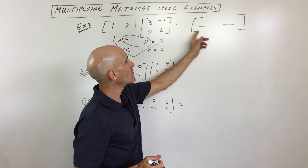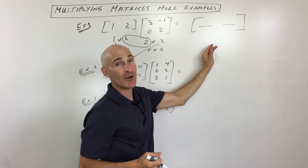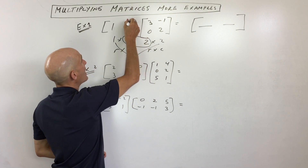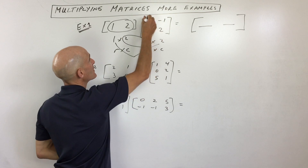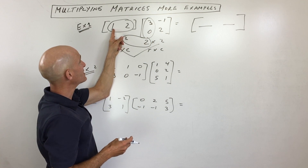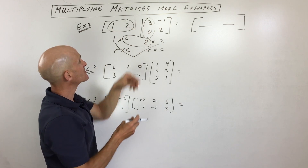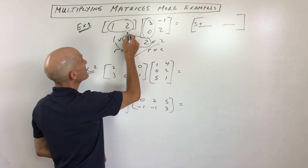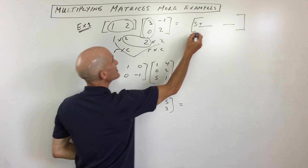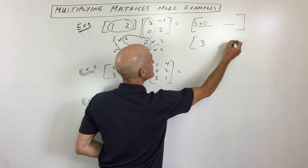So what we have here is the element that's in the first row, first column. So what we do is we take the first row times the first column. We take the first element in this row times the first element in this column — one times three is three — plus the second element in the row times the second element in the column — two times zero is zero. We add those together, and that's three.